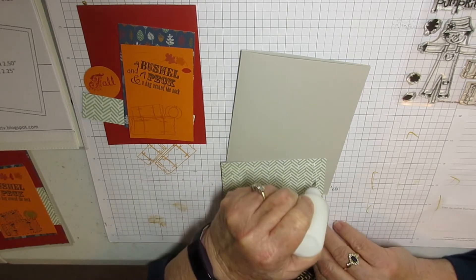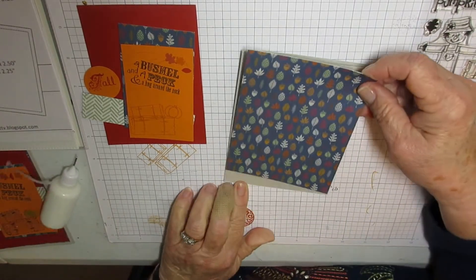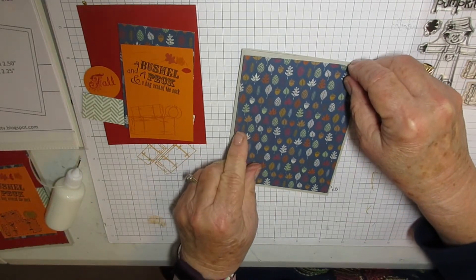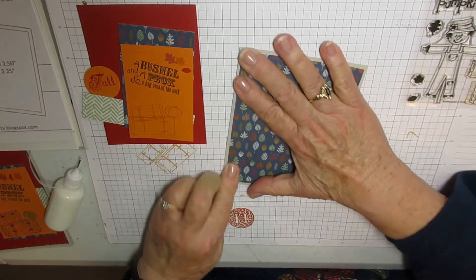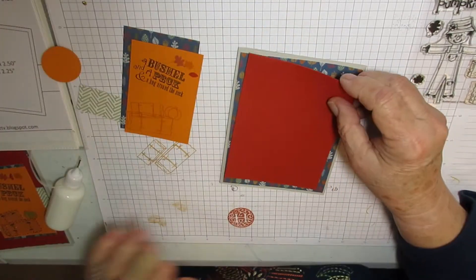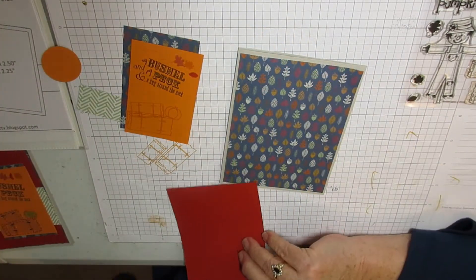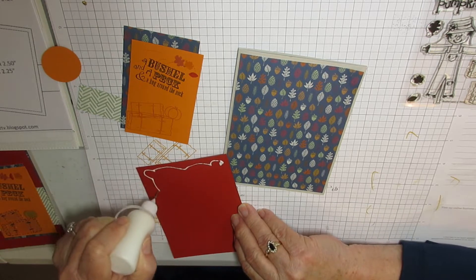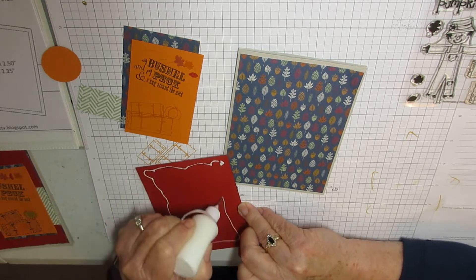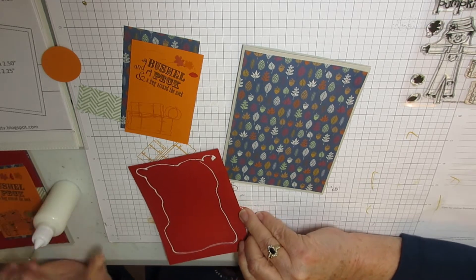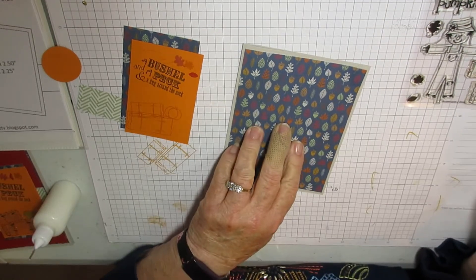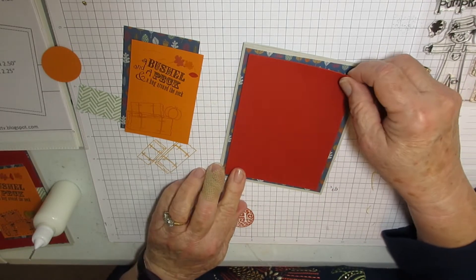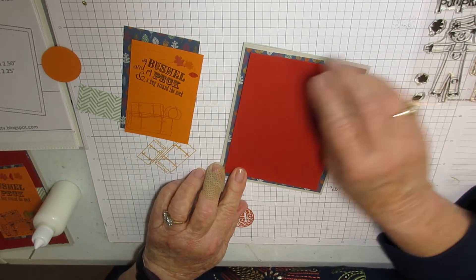We're going to put the first layer on the card base, which is an A2 card base. Then we're going to put the solid piece on top of the designer paper, and that one is four by five and a fourth.